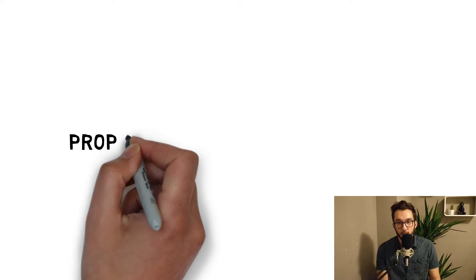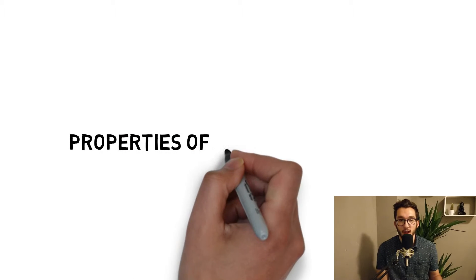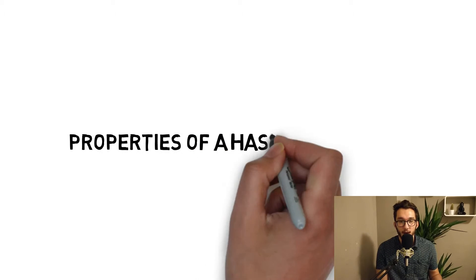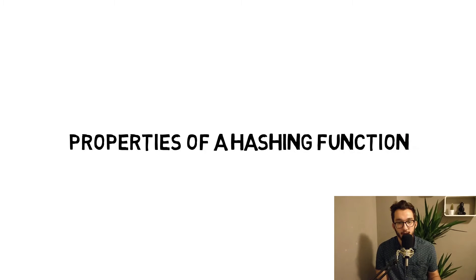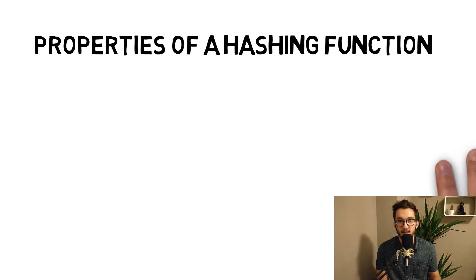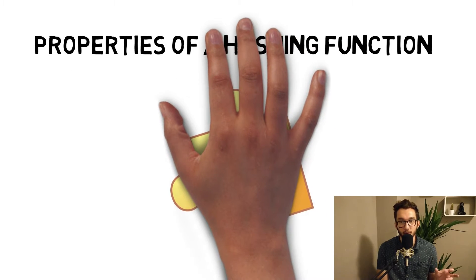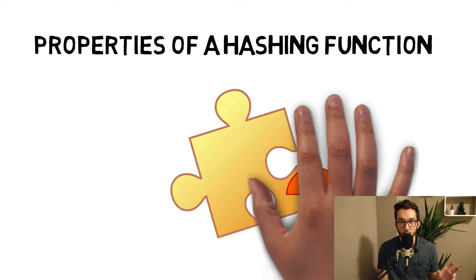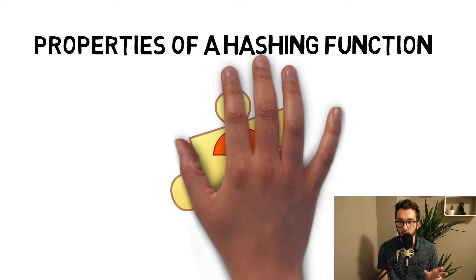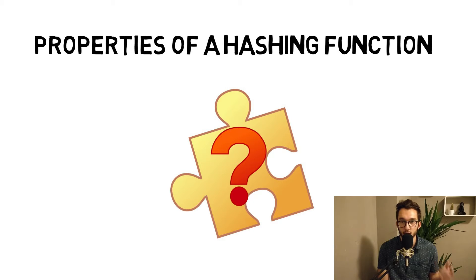What properties should a hash function have? First, it should be deterministic — it always results in the same output. If you create a hash of some data, you always get the same output; it should not change after a second generation.